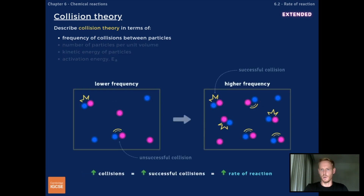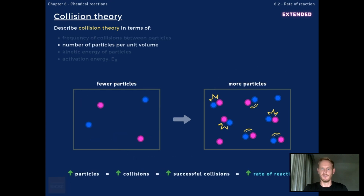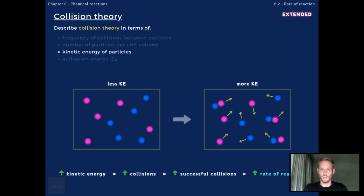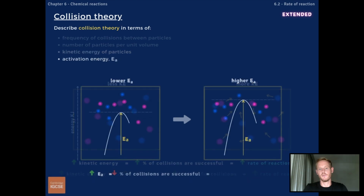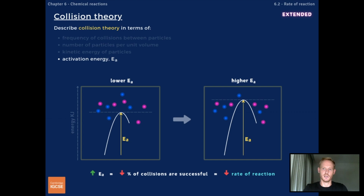The frequency of successful collisions depends on four factors. Number one is the frequency of collisions between particles — because a certain proportion of collisions are always successful, a greater number of collisions in a given unit of time will also result in a greater number of successful collisions. Number two is the number of particles per unit volume — more particles in a given volume will result in more frequent collisions and therefore more frequent successful collisions. Number three is the kinetic energy of the particles — greater kinetic energy means collisions will be more frequent, because particles are moving faster, and more of these collisions will be successful, because more particles have energy equal to or greater than the activation energy. Number four is activation energy — if the activation energy of a reaction is higher, a smaller proportion of collisions will be successful, because fewer particles will have energy that exceeds the activation energy.